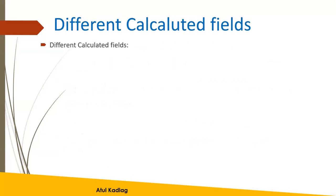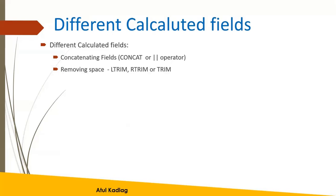What are the different calculated fields? When we want to combine two columns, we can use concatenating fields using the CONCAT function. There is also removing spaces — if some data is not formatted correctly, we can use LTRIM, RTRIM, or just TRIM to remove spaces from both sides. We will also see how to give names (aliases) to calculated columns, and how to perform mathematical calculations using plus, minus, multiplication, or division operators. This is what we are going to see practically.